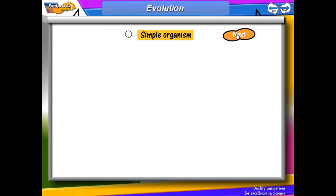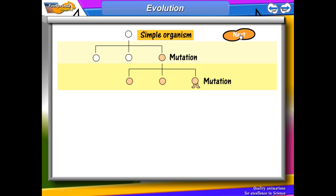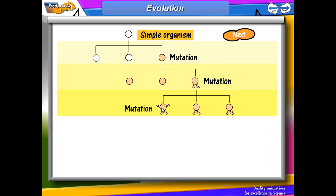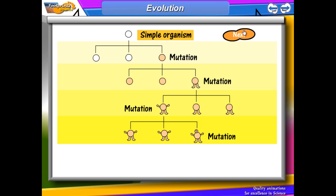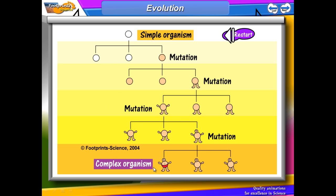This diagram shows how evolution by natural selection can occur. Within a simple organism you can get a random mutation — all a mutation means is a change in the genetic material. If this mutation is favourable, that organism is more likely to survive and therefore more likely to reproduce. From there, another favourable mutation can be passed on to the next generation, and so on. In this example it has gone from a simple organism to a complex one in around five generations.